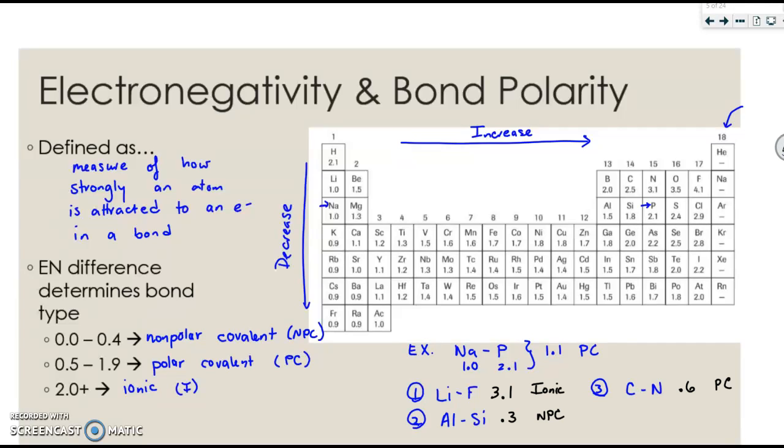Hopefully, once you find the elements and you've found the difference in electronegativity, you saw that LiF was ionic because it has a difference of 3.1. The AlSi has a difference of 0.3, so it's nonpolar covalent. And the C and the N have a difference of 0.6, so it would be polar covalent.